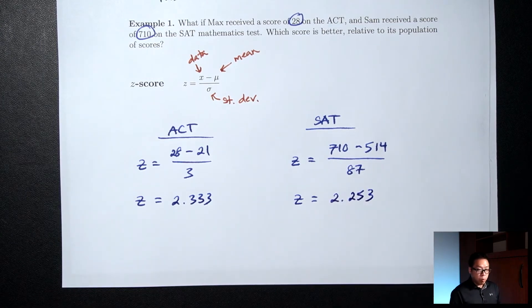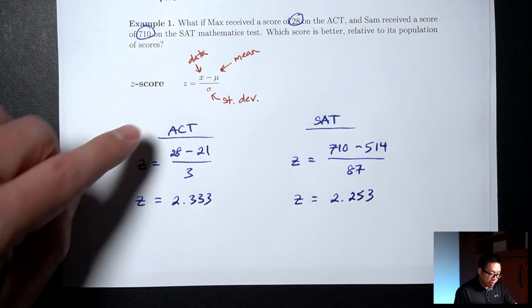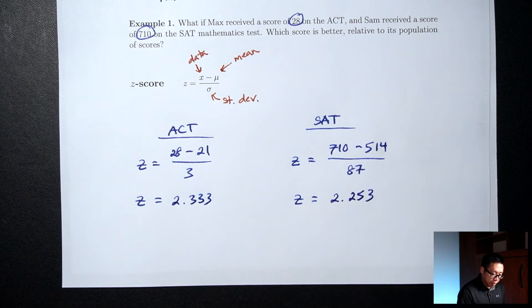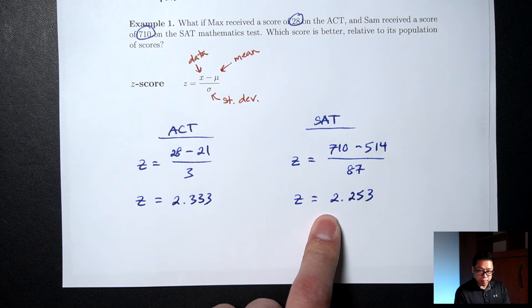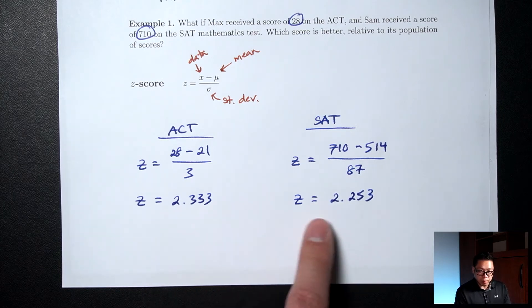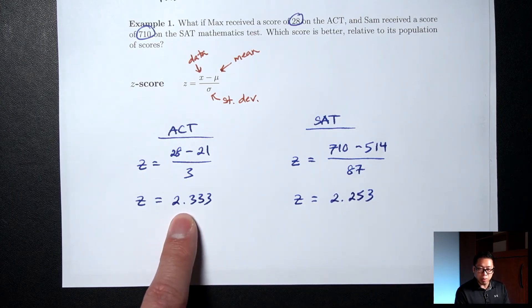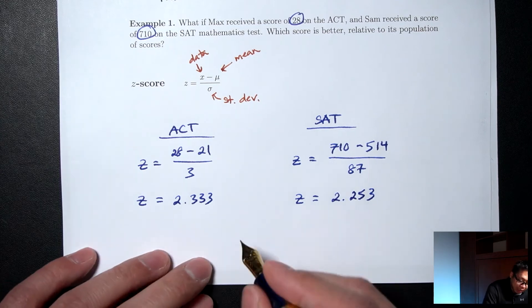So now, which score is better? 28 on the ACT or 710 on the SAT? 2.333 versus 2.253. Which one's bigger? The 2.333. So the ACT score was better.